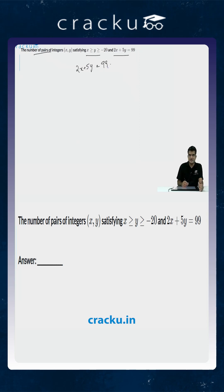So if 2x plus 5y is equal to 99 and x is greater than or equal to y, if we replace y in place of x over here 2y plus 5y will be less than or equal to 2x plus 5y because y is less than or equal to x.